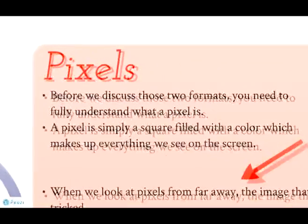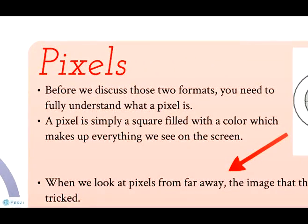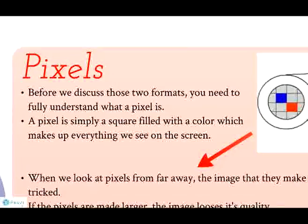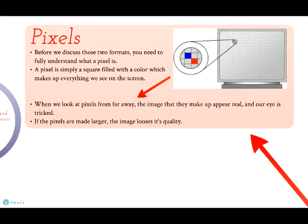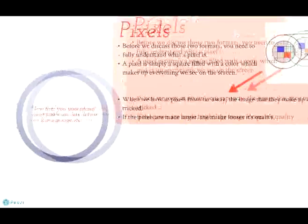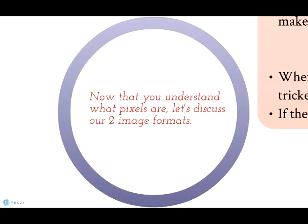Pixels. Before we discuss these two formats, you need to fully understand what a pixel is. A pixel is simply a square filled with a colour which makes up everything we see on the screen. When we look at pixels from far away, the image that they make up appears real and our eye is tricked. If the pixels are made larger, the image loses its quality. Now that you understand what pixels are, let's discuss our two image formats.